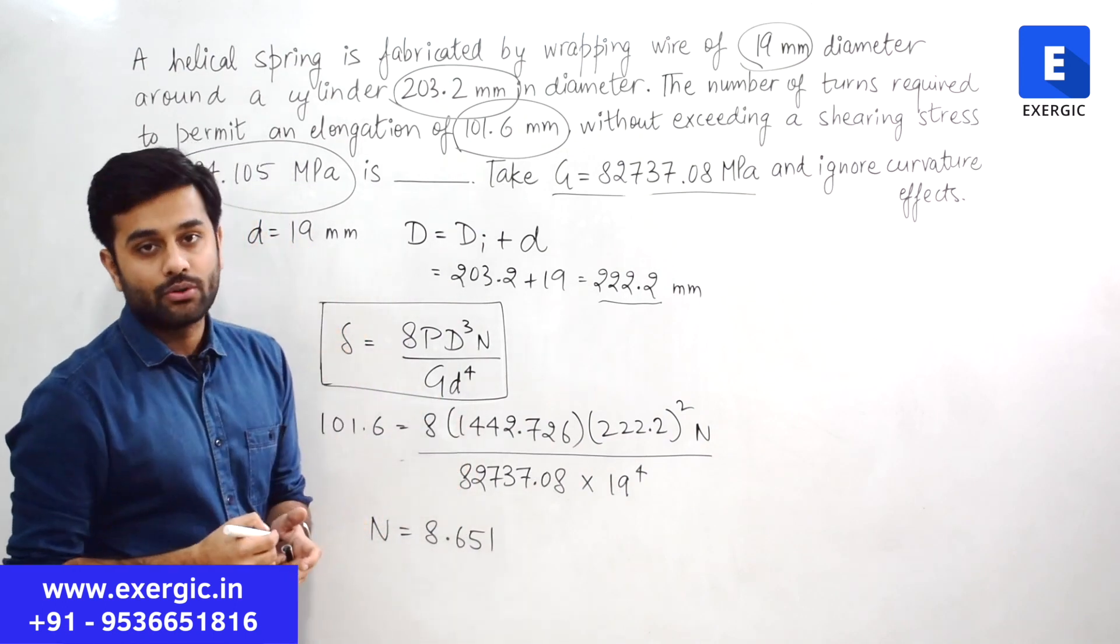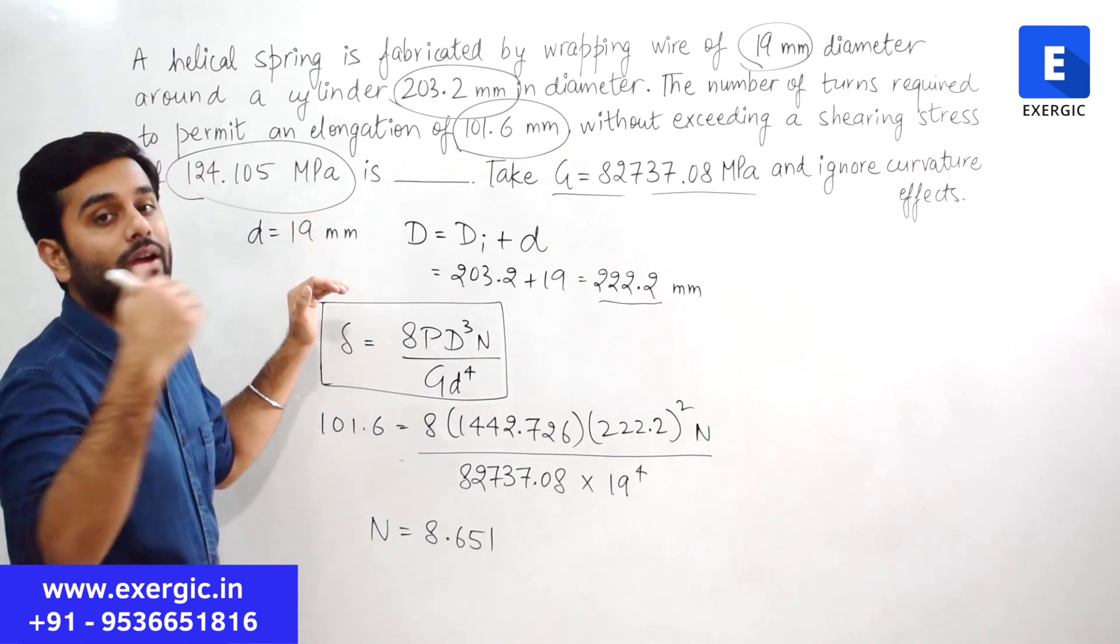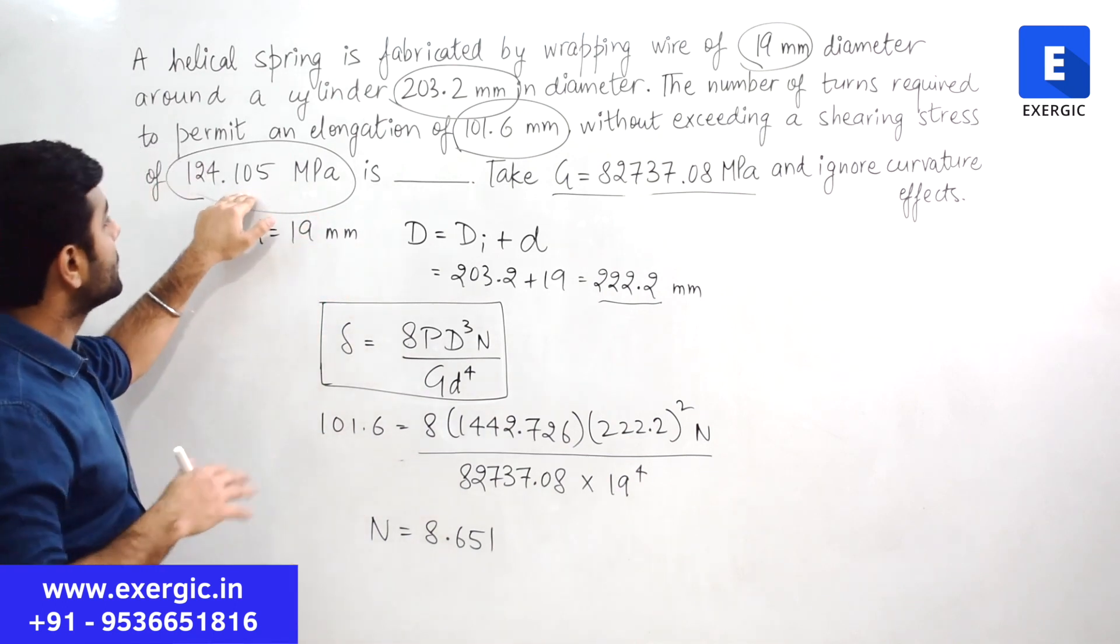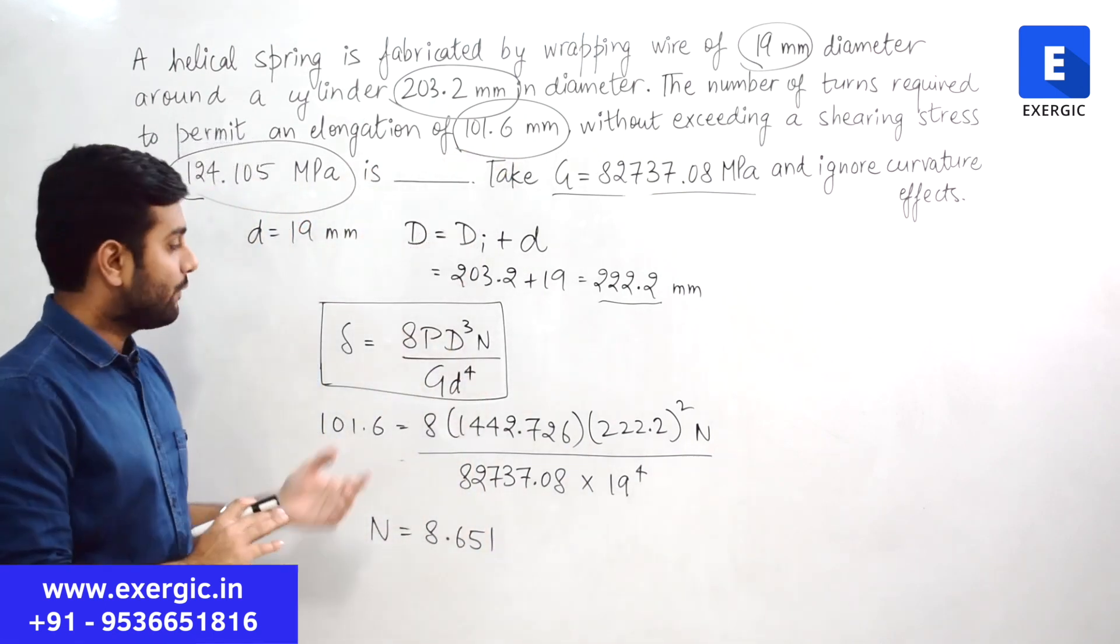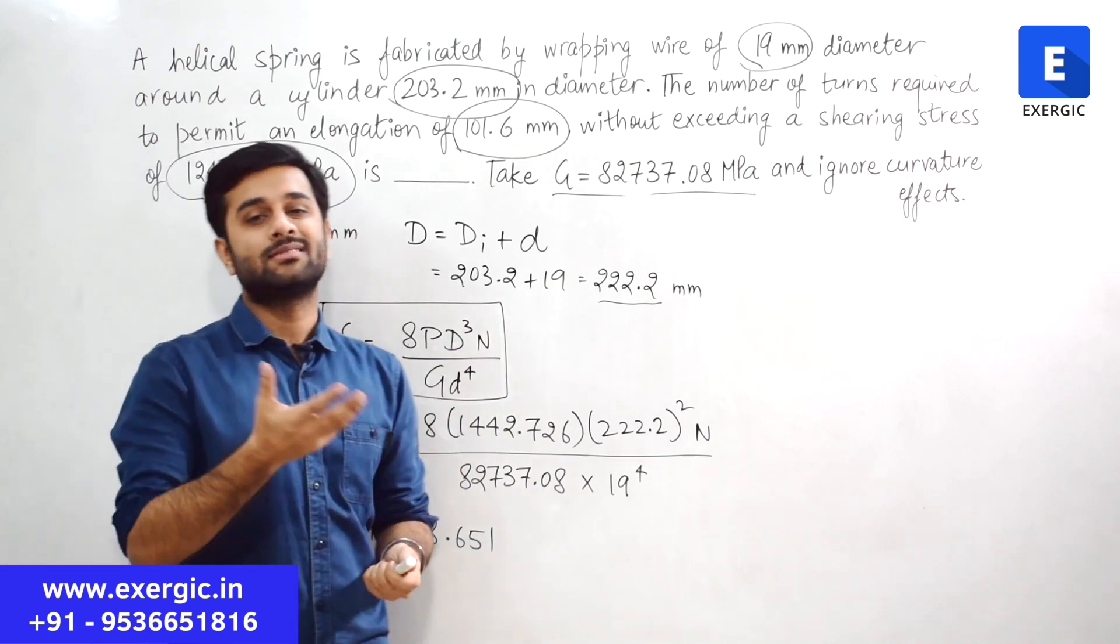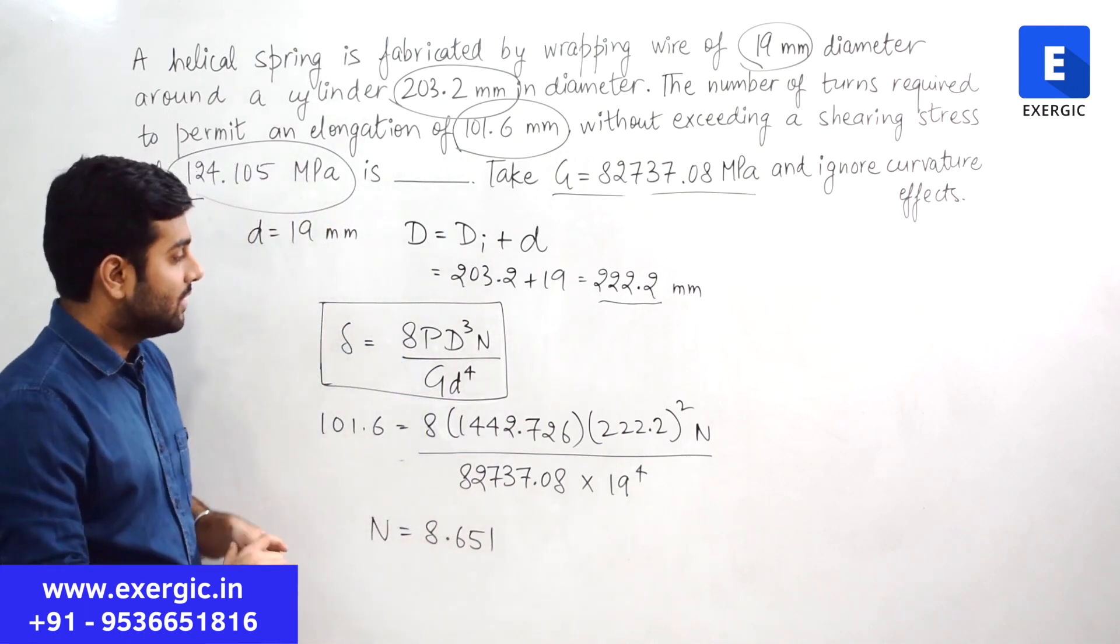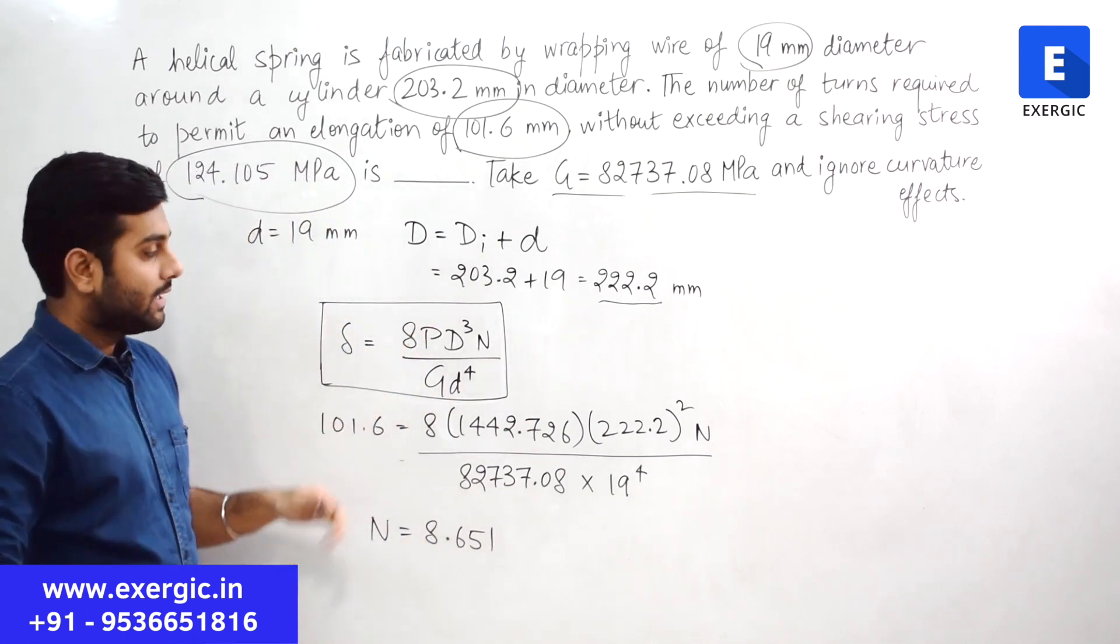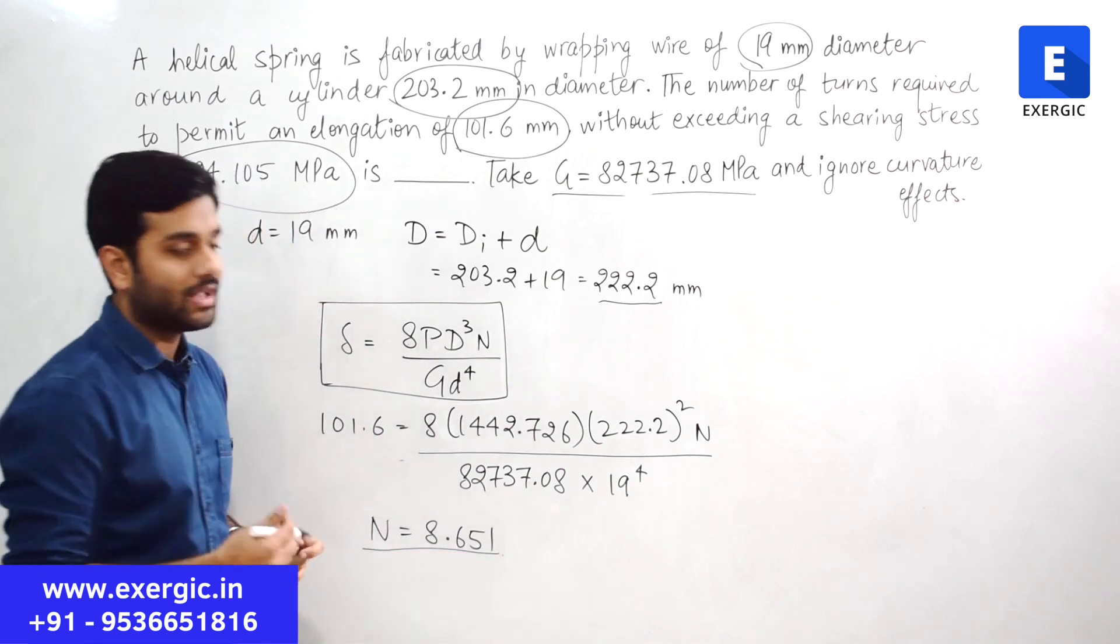Delta value is also given to you in the question. Del value, deflection which is the allowed value of deflection, is 101.6 mm. And from this you can find out the value of N. So you may think that is such a simple question, what I can learn from this? Let me tell you. Just put all the values here and solve it. You will get the value of N as 8.651.